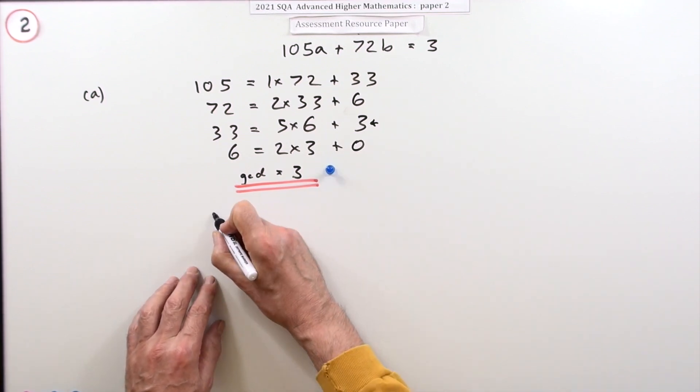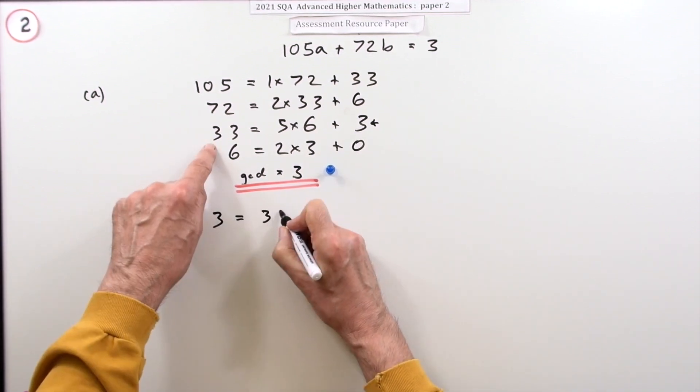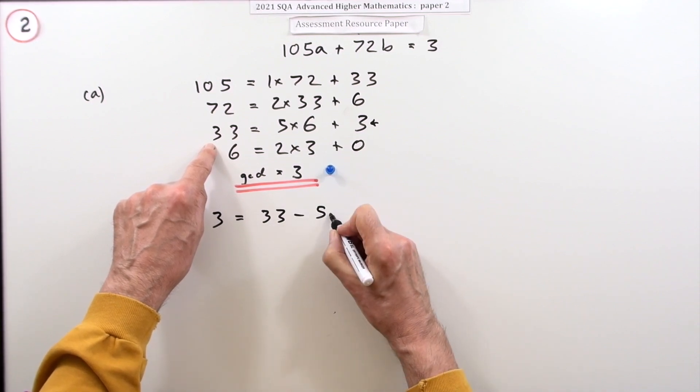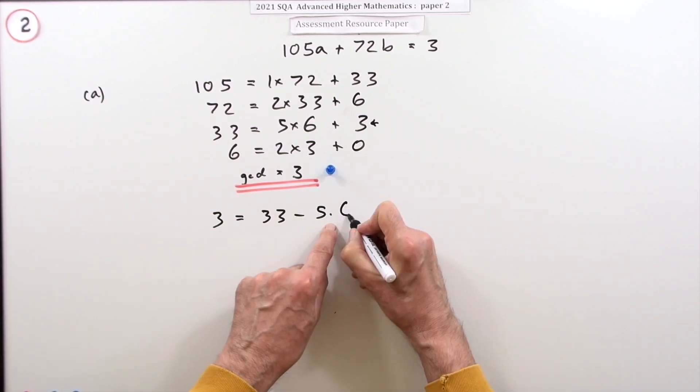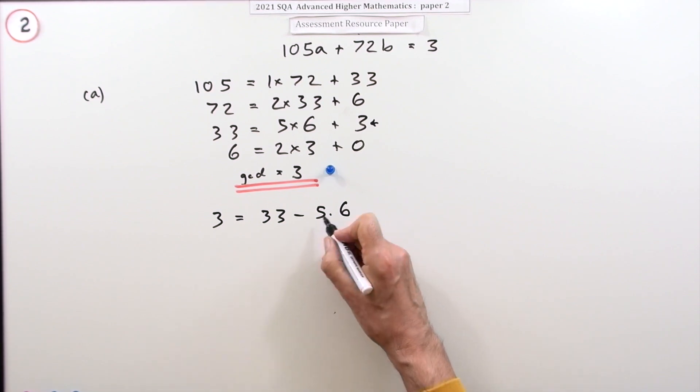Start reading backwards. Three equals 33 minus five lots of six. I'm going to use a little dot for multiplication because it gets full of crosses.